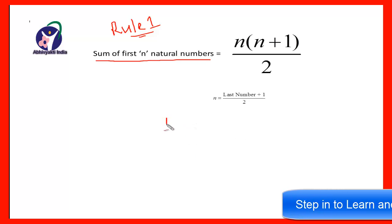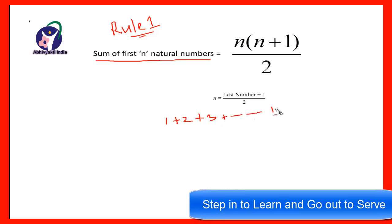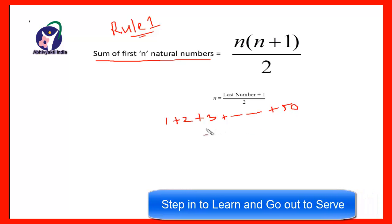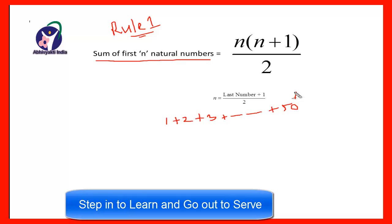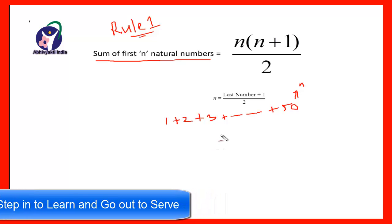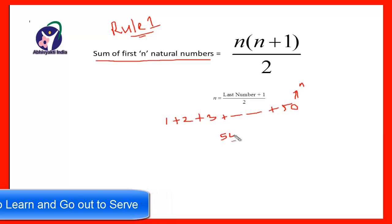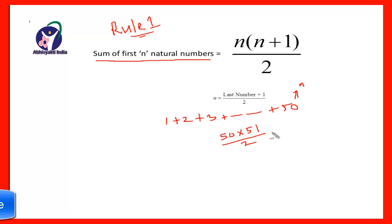If you have to find the sum of the numbers 1 + 2 + 3 + ... up to 50, we have the first 50 natural numbers. Here this last number is taken as n, and therefore putting it in the formula we get n(n+1)/2, that is 50 × 51 divided by 2, which gives 1275.